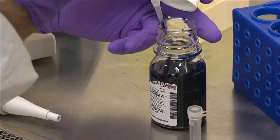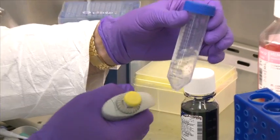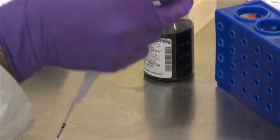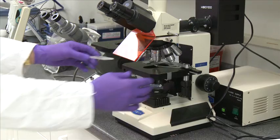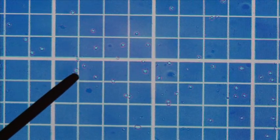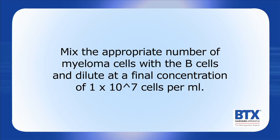Take 90 µL of Trypan Blue and pipette into a microcentrifuge tube. Resuspend the cells by flicking the pellet gently. Take a 10 µL sample of cells and mix with the Trypan Blue by gently flicking the tube. Add 10 µL of the sample to a hemacytometer and view cells under a microscope. Trypan Blue stains dead cells; dead cells will be blue and live cells will be white. Count live cells and perform a calculation to determine cell density. Mix the appropriate number of myeloma cells with the B cells and dilute to a final concentration of 1×10⁷ cells per mL.